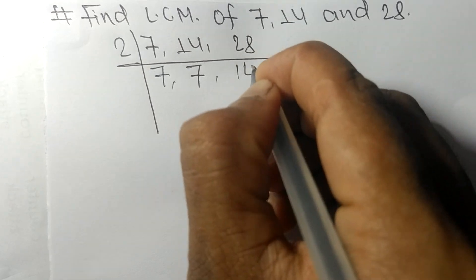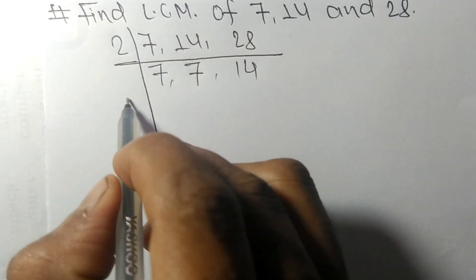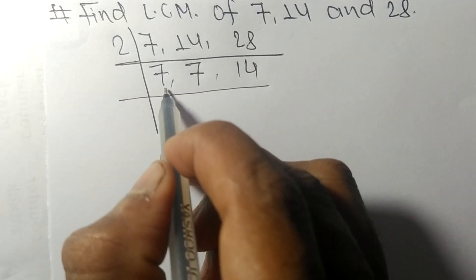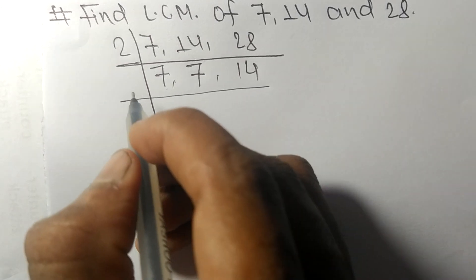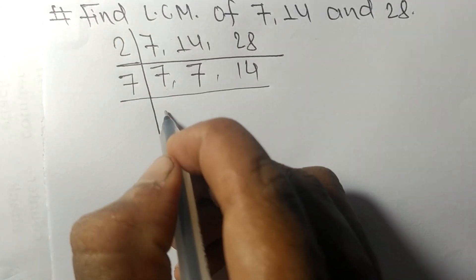Now we have 7, 7, and 14, which are exactly divisible by 7. 7 times 1 equals 7, 7 times 1 equals 7, 7 times 2 equals 14.